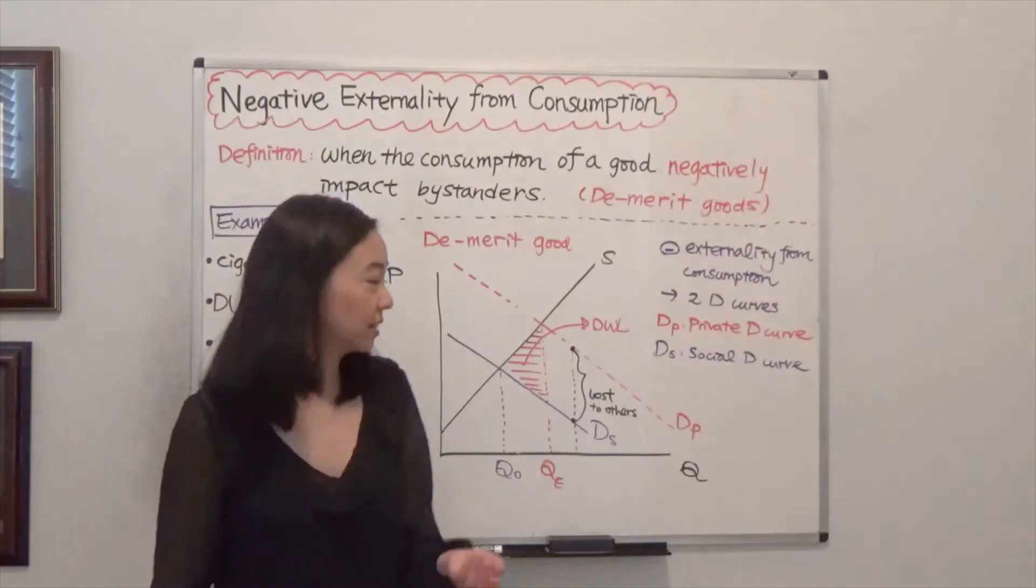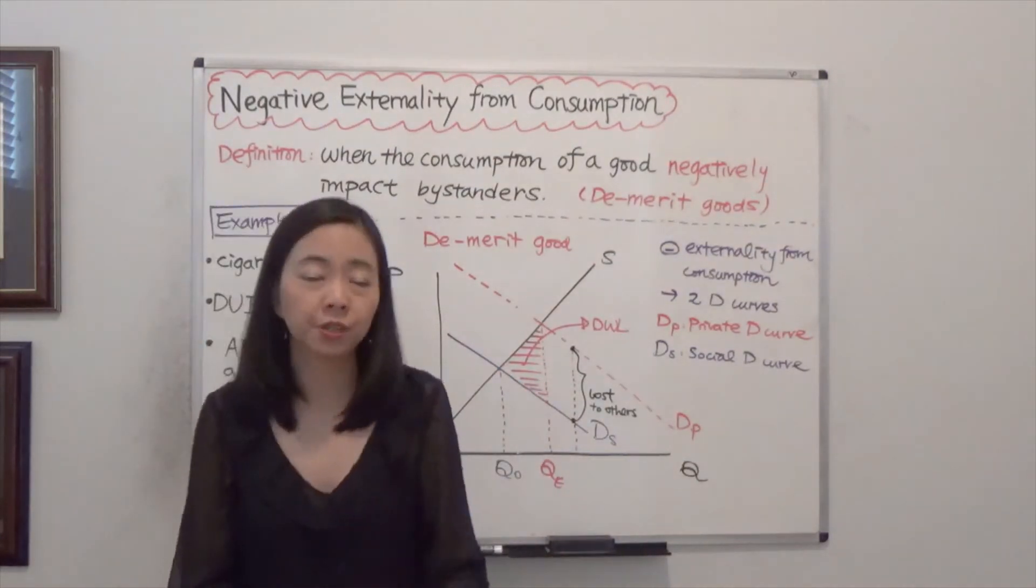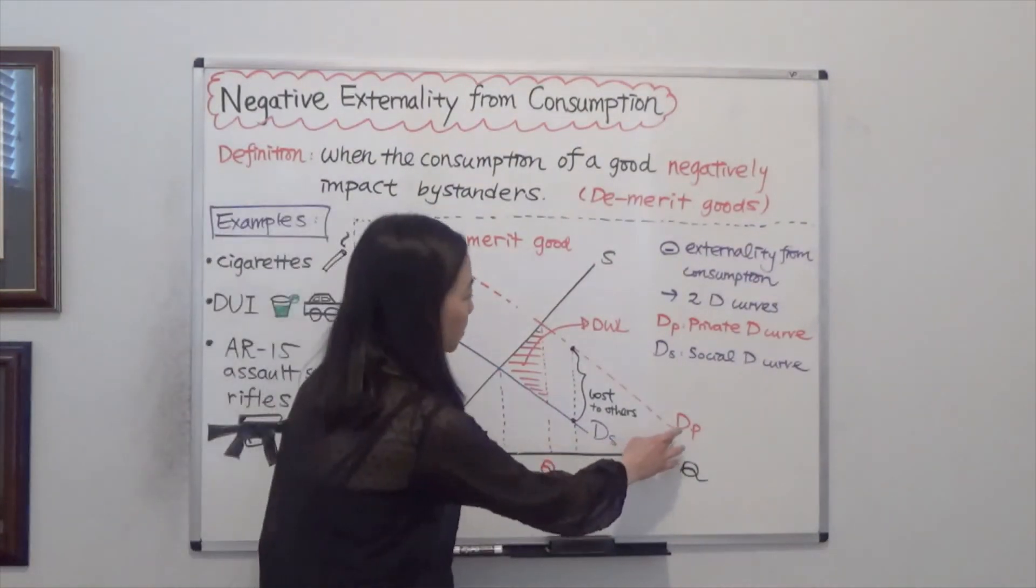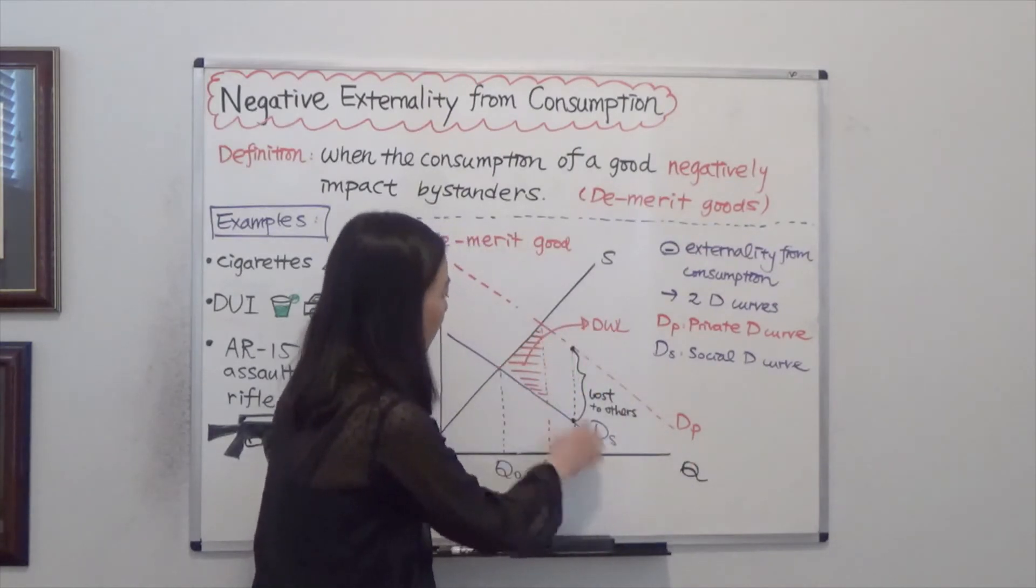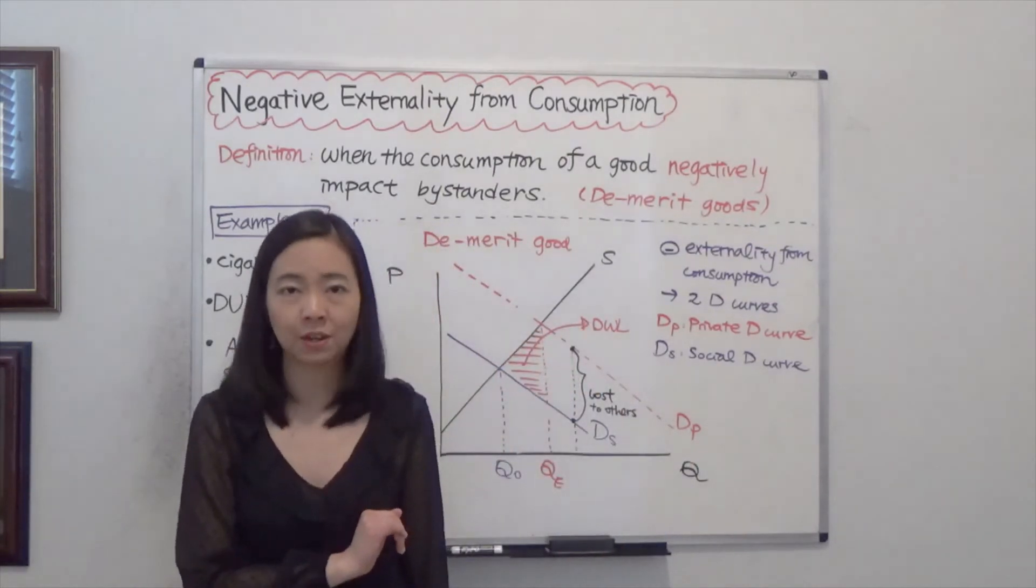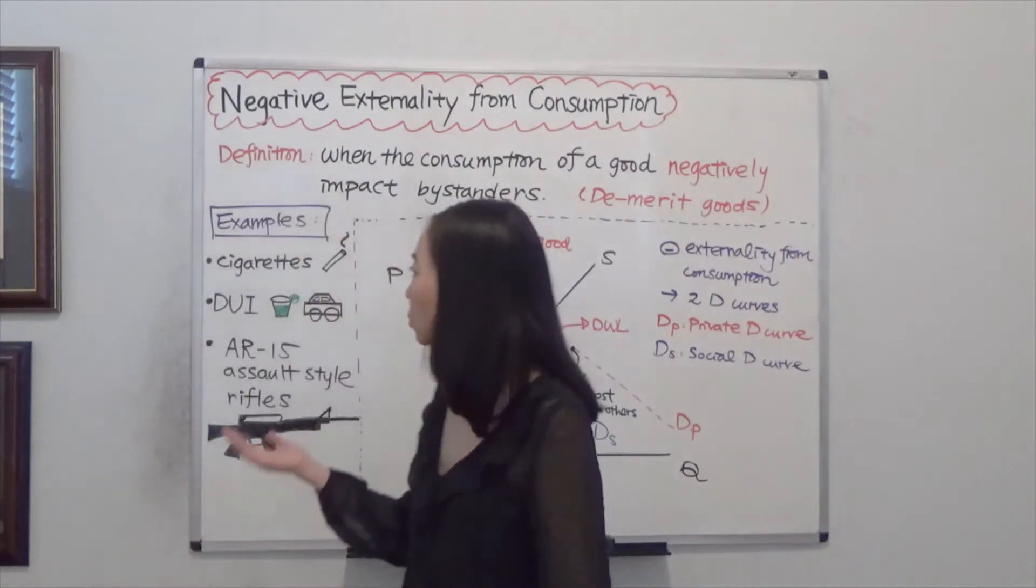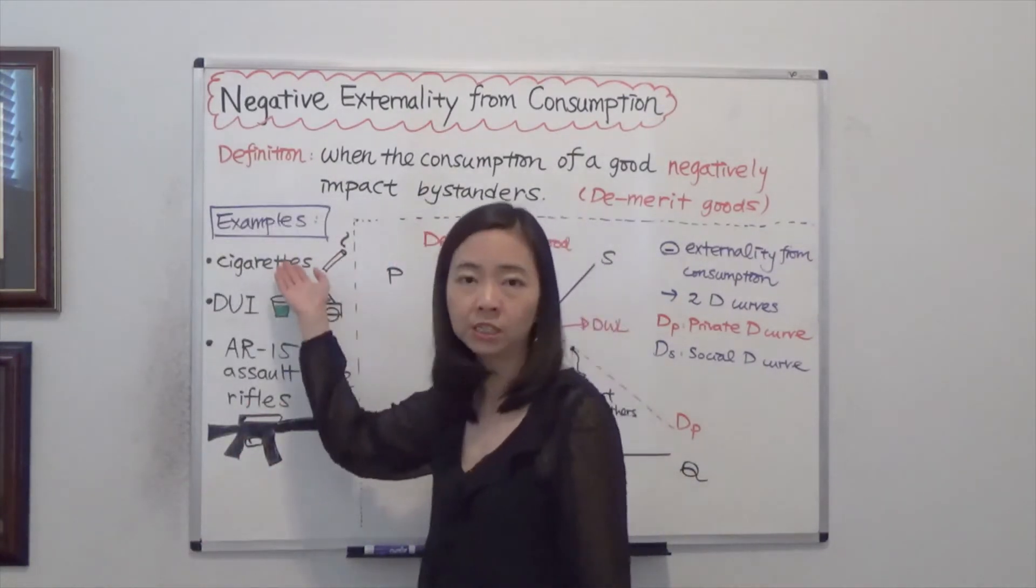So how do we correct this deadweight loss? Typically, what we do is try to make your private demand curve shift to the left to DS. Then we will be able to correct the deadweight loss. So there are several ways. One is to make the consumption more expensive.